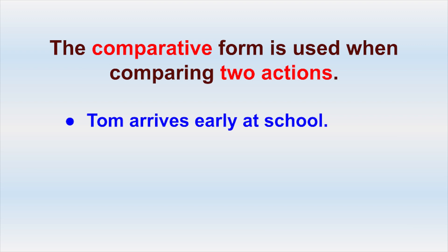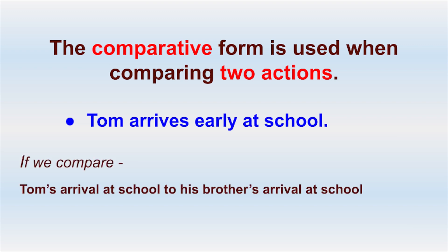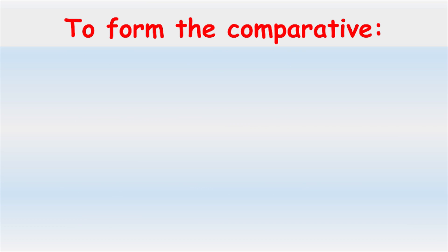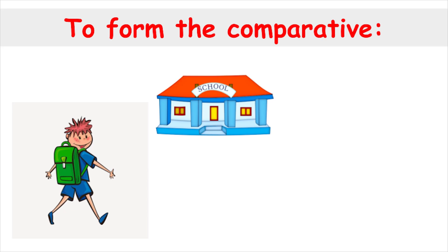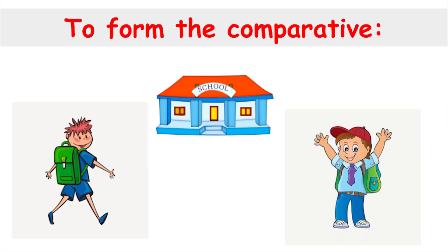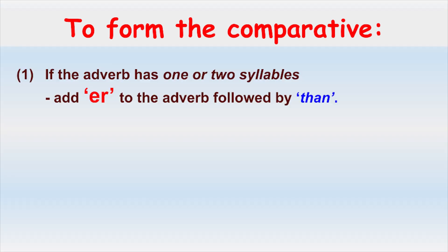No action is compared. But if we compare Tom's arrival at school to his brother's arrival at school, we would now be comparing two actions. To express this, we need to use the comparative form of the adverb. Rule number one: if the adverb has one or two syllables, we add -er to the adverb followed by 'than'.